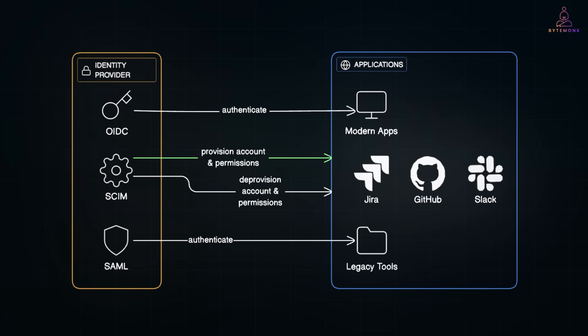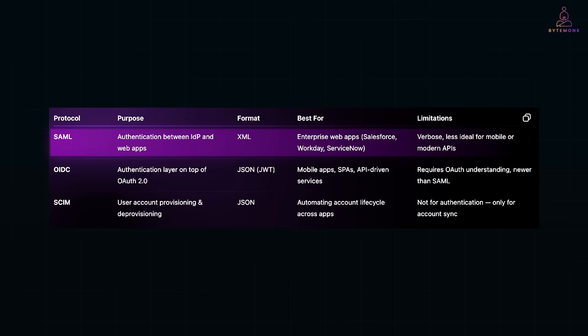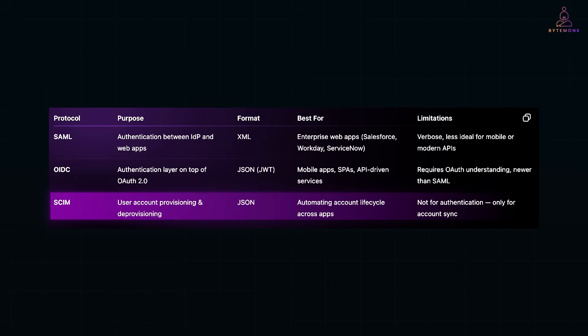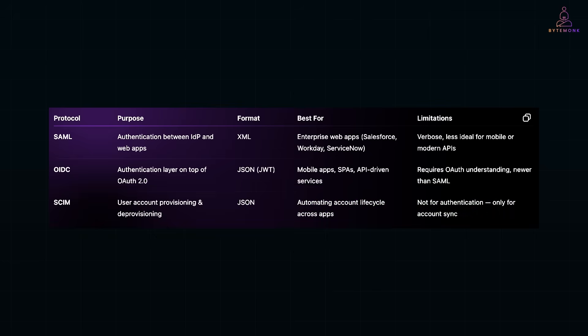When combined, you get secure, centralized login plus automated account management, reducing both friction for users and attack surface for the company. The takeaway: SAML is the enterprise workhorse — XML-based, great for web apps, but less ideal for mobile. OIDC is the modern, API-friendly option built on top of OAuth 2.0. SCIM handles the account lifecycle, creating, updating, and removing user accounts automatically. They are not rivals — they are puzzle pieces in the bigger SSO picture. SAML or OIDC handles authentication, SCIM keeps account data in sync, and your identity provider becomes the single, secure point of login for everything you use.